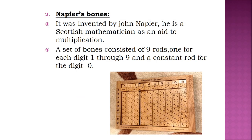Napier's Bones: Invented by John Napier, a Scottish mathematician, it was used for multiplication. It consists of a set of bones with nine rods — one for each digit from one to nine — and a constant rod for zero. It was widely used as a multiplication table aid.